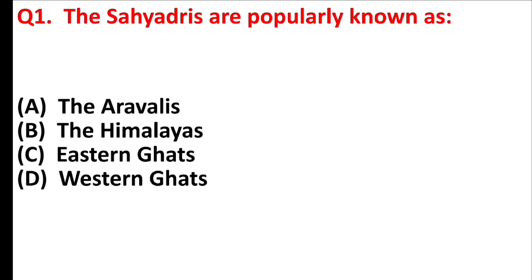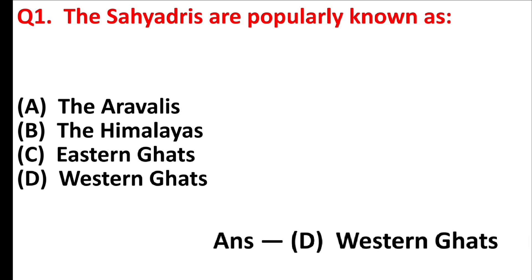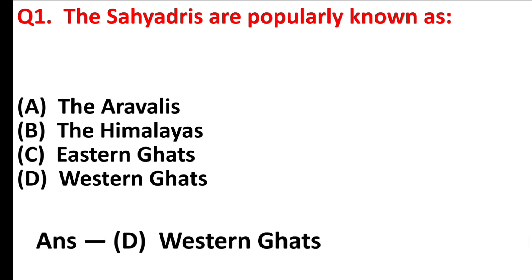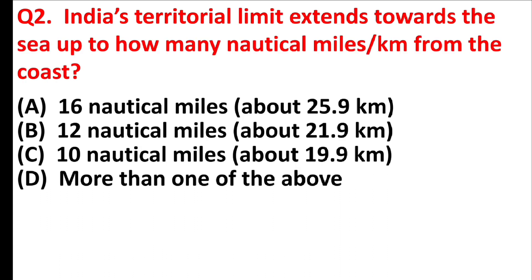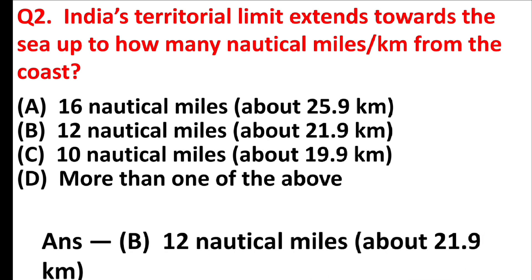The Sahyadris are popularly known as Western Ghats. Answer is Option D. India's territorial limit extends towards the sea up to how many nautical miles per kilometer from the coast? Answer is Option B: 12 nautical miles, above 21.9 kilometers.